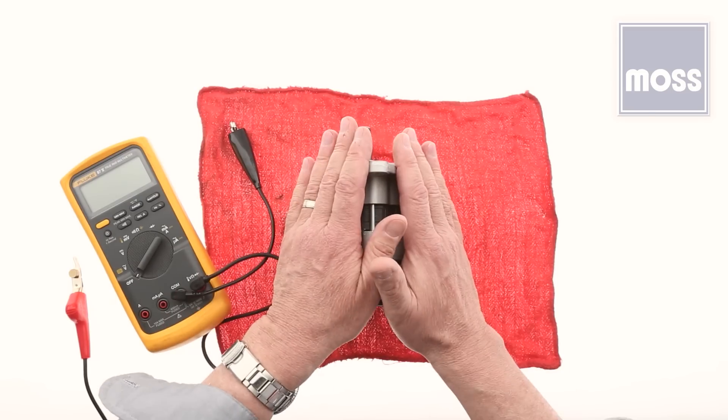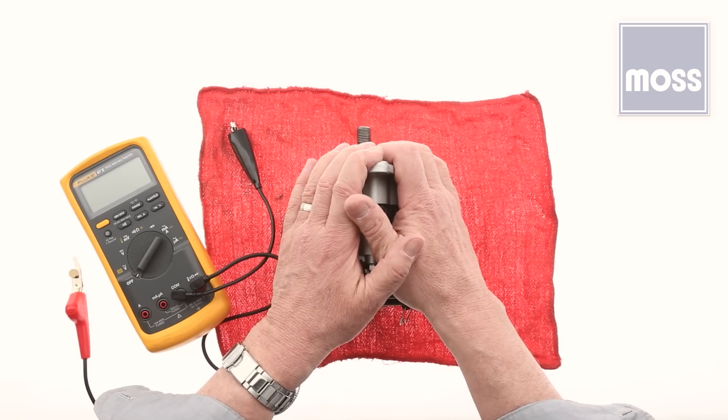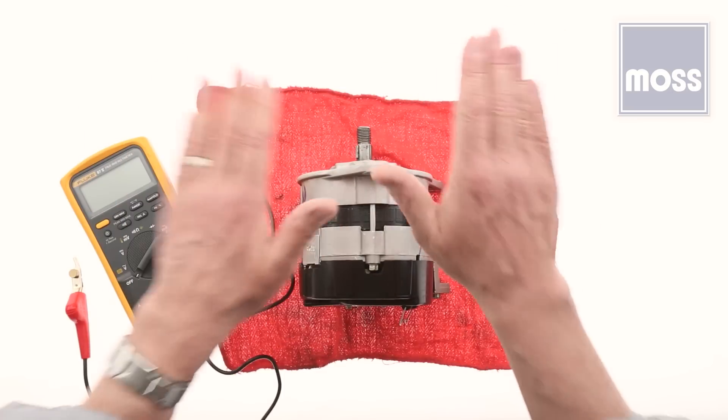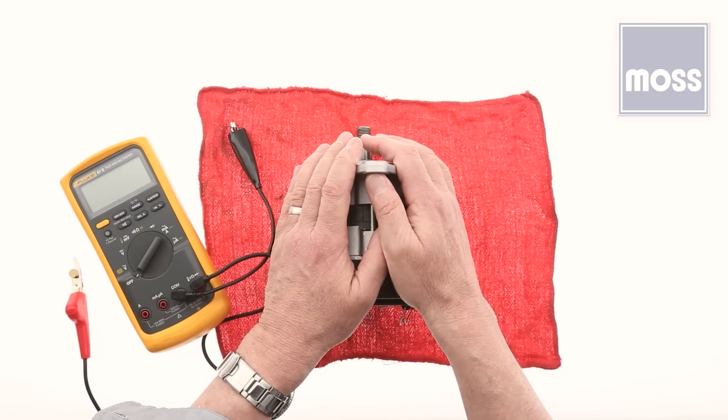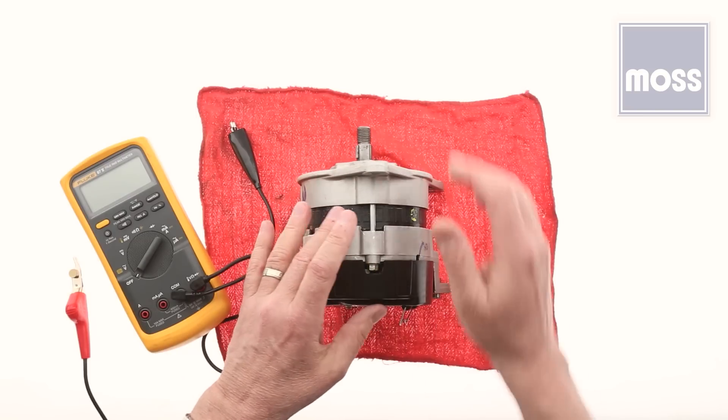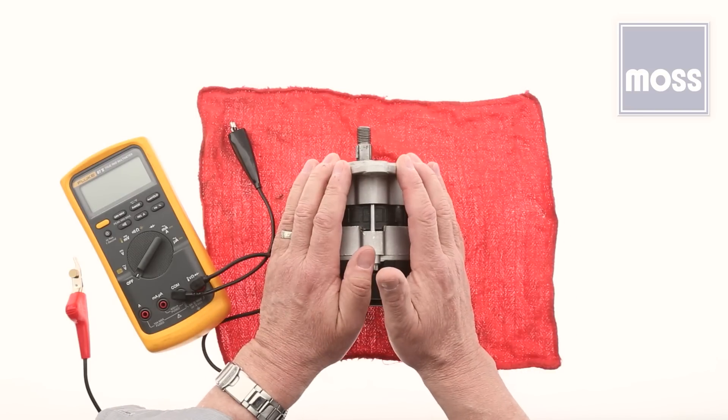So let's do this. We suspect we have a problem with our charging system. Maybe the lights look dim, or maybe the battery was almost dead this morning. To test, we want the alternator to be in the car with all the wires, cables, and belt, everything on it the way it would be if it was driving.